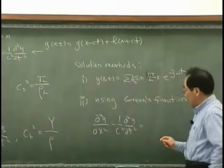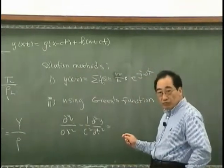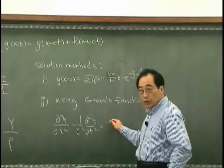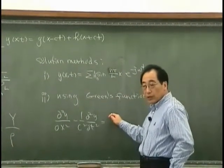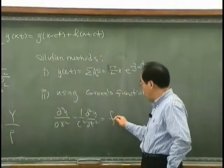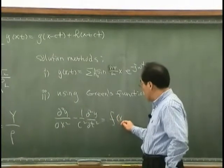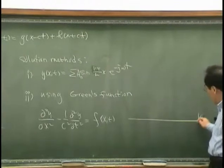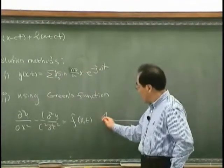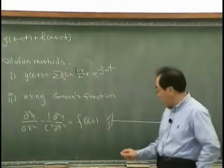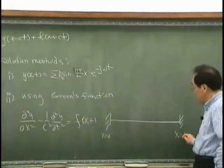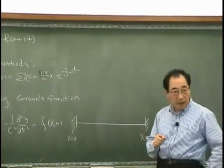Suppose I have excitation at a certain point or distributed excitation. If I say that is f(x,t), for example, I have a string that is fixed both ends. This is x equal 0, and this is x equal L.